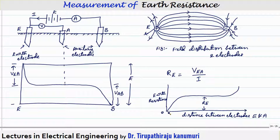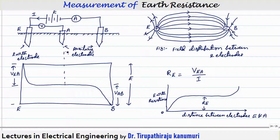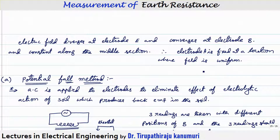If you calculate the resistance — earth resistance with respect to distance between the electrodes — the resistance will vary initially, then remain constant, then vary again. To measure the resistance, R equals voltage divided by current. This voltage is the value of VEA divided by the current passing through the electrode. From this we can conclude that the electric field diverges at electrode E and converges at electrode B, and is constant along the middle section.